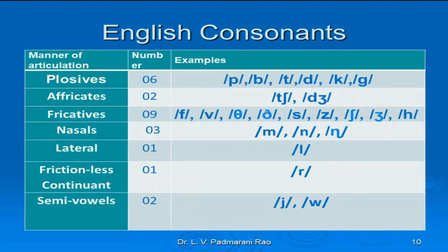Let us look at the distribution and classification of English consonants according to the manner of articulation. There are six plosives in English: P, B, T, D, K, G. Two affricates: CH and J. Nine fricatives: F, V, TH, DH, S, Z, SH, ZH, and H. Three nasal sounds: M, N, and NG. One lateral sound: L. One frictionless continuant: R. And two semi-vowels: W and Y. Thereby making the total number 24 according to the manner of articulation.